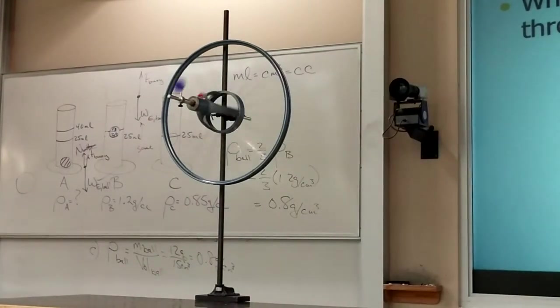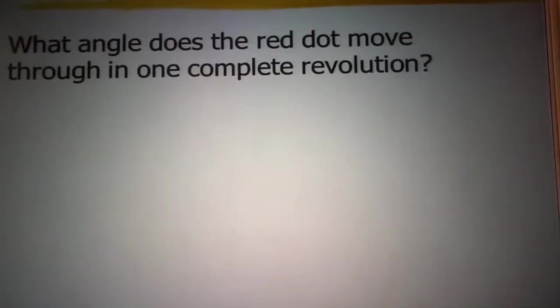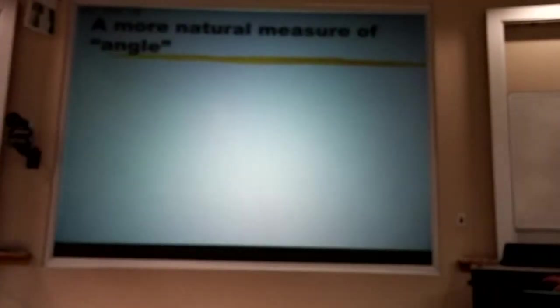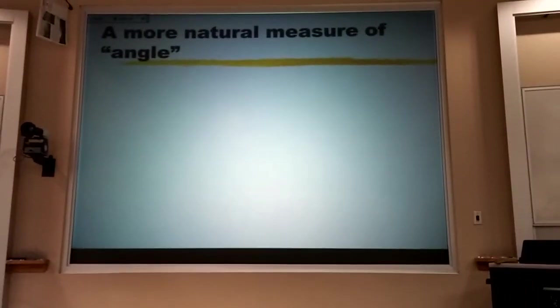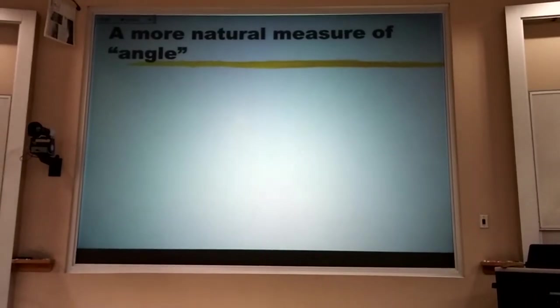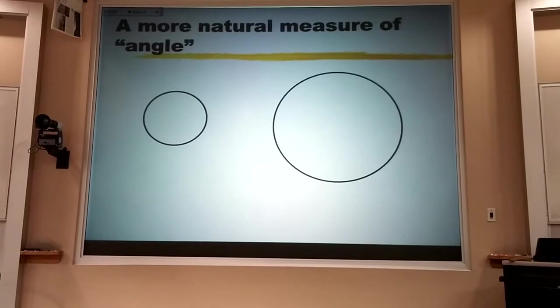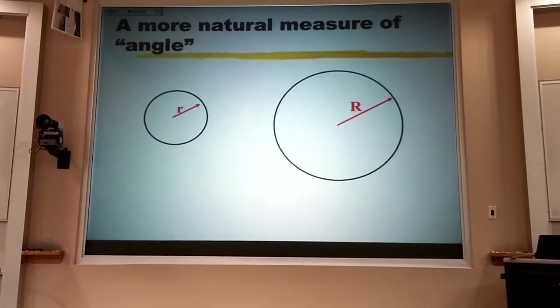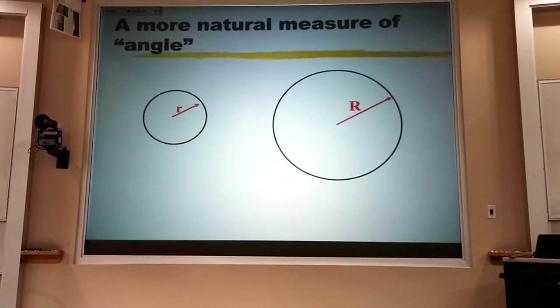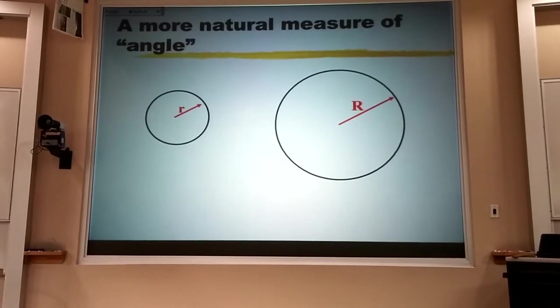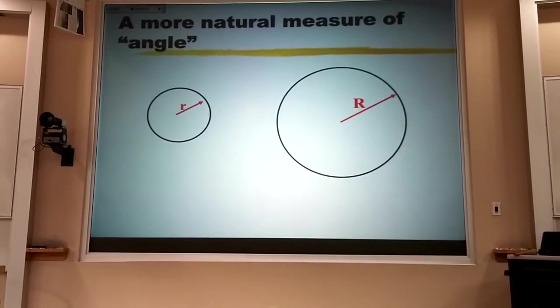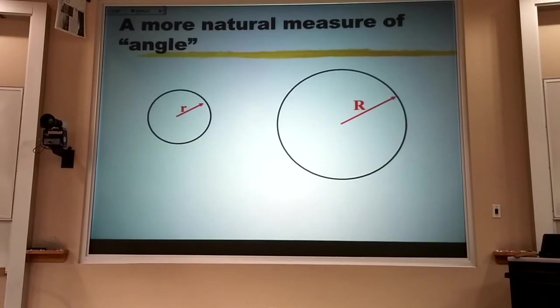There's another measure of once around a circle that is just more natural. If I look at a circle, any circle, I get, regardless of radius, I get the same number that keeps popping up. Now, if I have two circles, one with a small radius, one with a large radius,